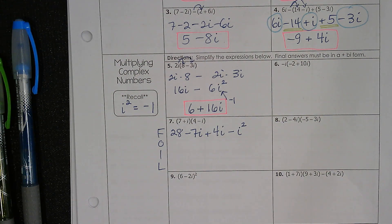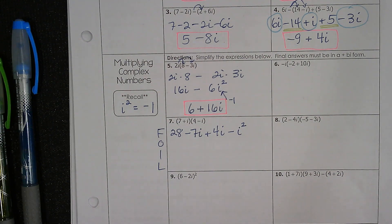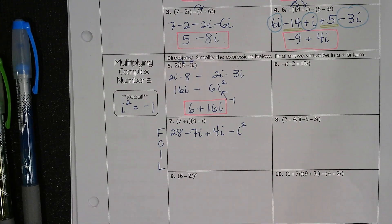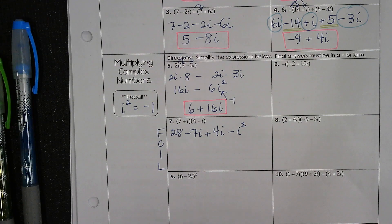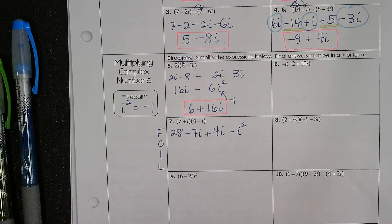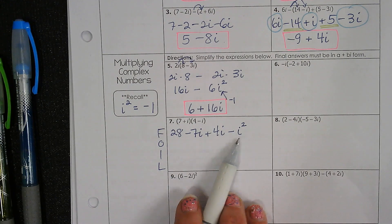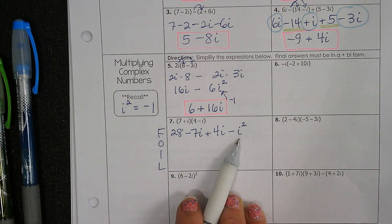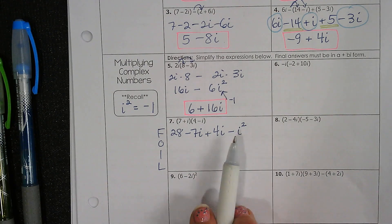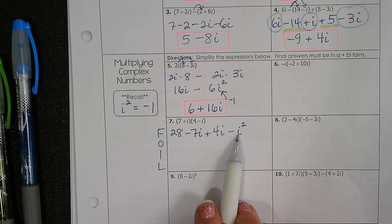You had no idea how handy this skill would come in in Algebra 1, did you? So now we're using FOIL quite a bit. And before you combine stuff, we can change this, right? Since i squared is negative 1,